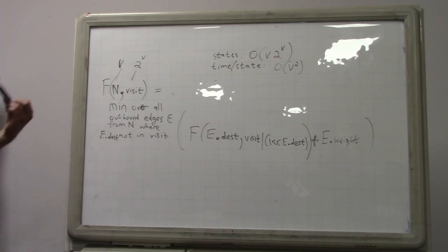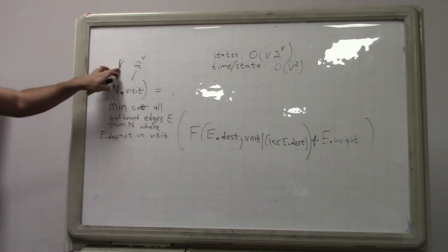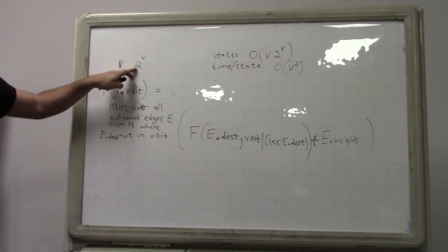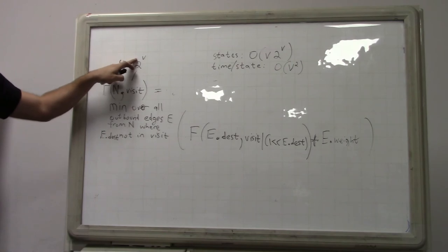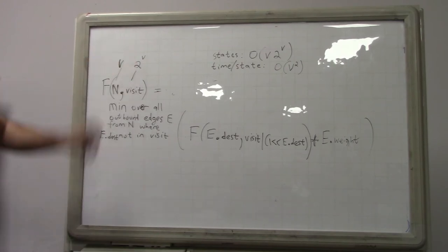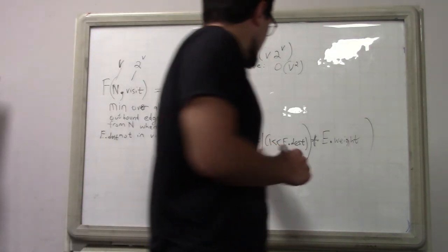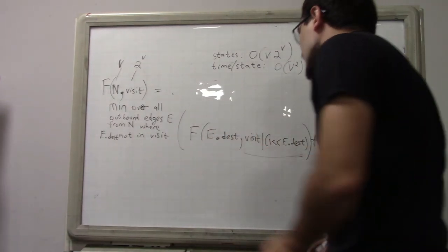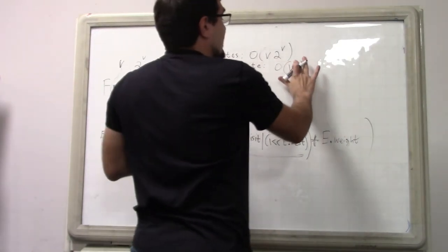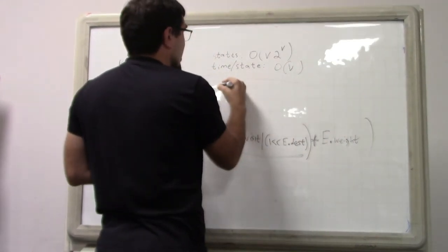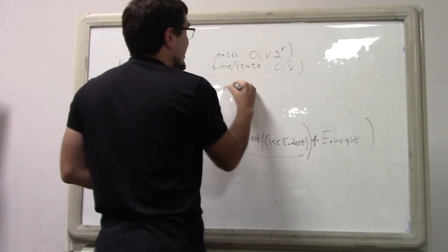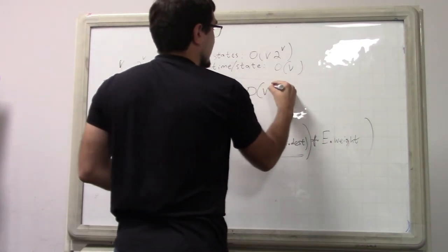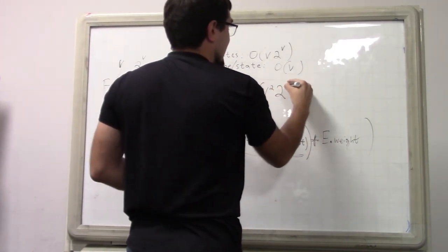so if you kind of assume that because this requires this much memory anyway you will never run this on more than 64 because this would require more memory than your system will ever have, you can think of this as running in order 1 and that if this runs in order 1 then time per state becomes order b and now you reach a total time complexity of b squared 2 to the b